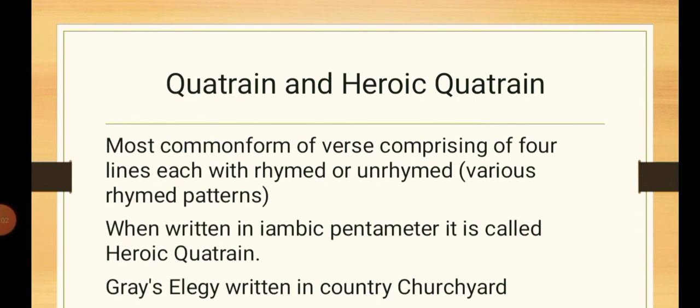Quatrain and Heroic Quatrain. As the name suggests, Quatrain means four. It is just like Couplet and Heroic Couplet. In Couplet, we had two lines, and Heroic Couplet was two lines written in iambic pentameter. Here we have four lines, most common form of verse comprising of four lines each, which can be rhymed or unrhymed, or of various rhyming patterns. But when these four lines are written in iambic pentameter, it will be called Heroic Quatrain.